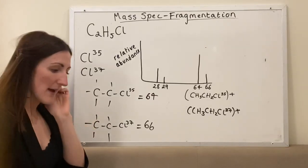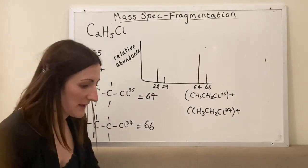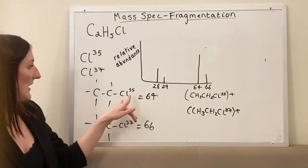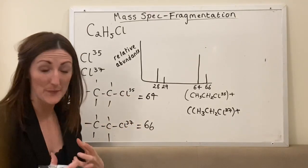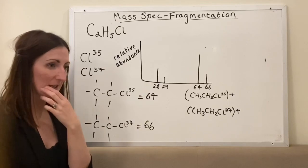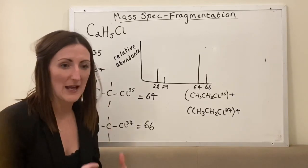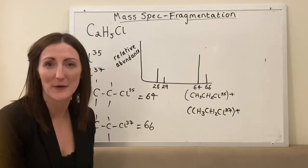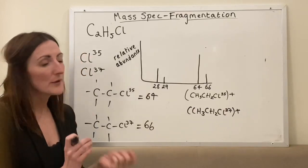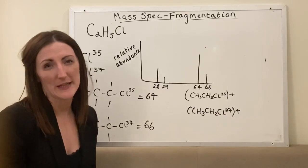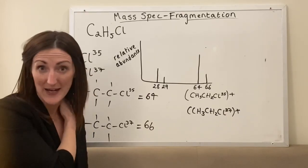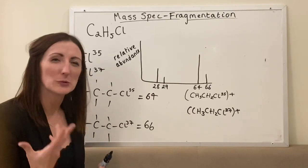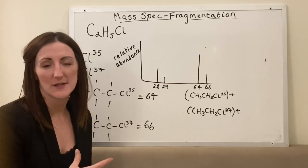With this, you could then get something like bromoethane — we swap out our chlorine for bromine. And you could get asked: what molecular ion peaks would be present in the spectra of bromoethane? All you have to do is think about the structure of bromoethane, what atoms are in it, and then remember what the two isotopes of bromine are.